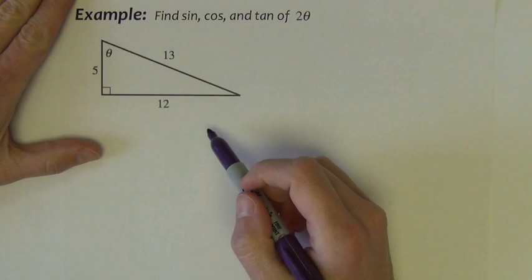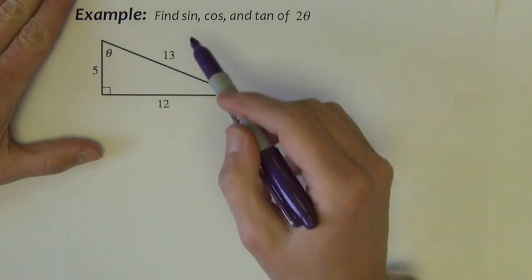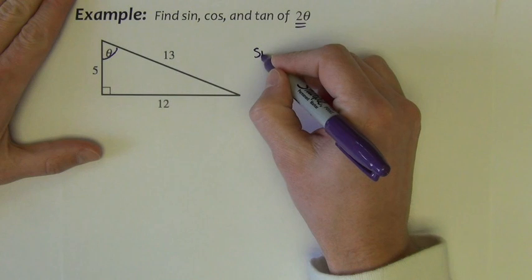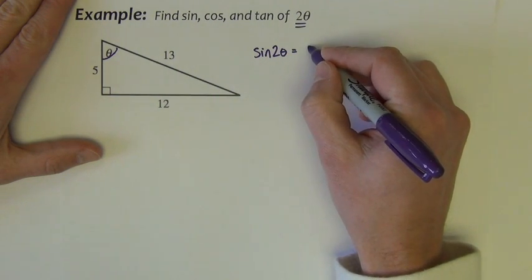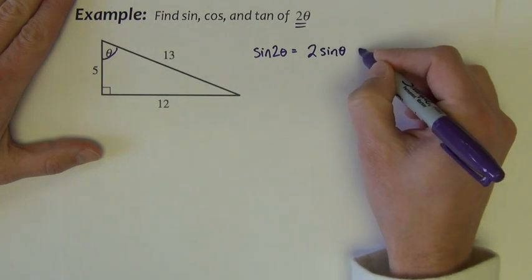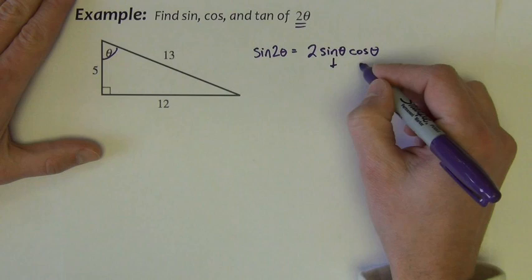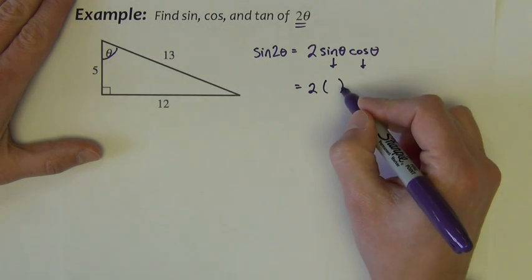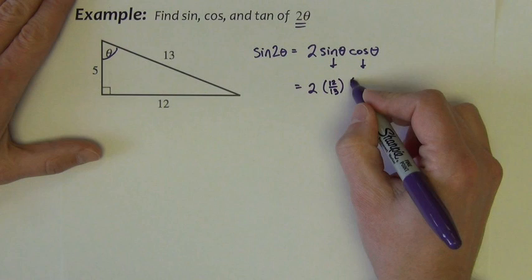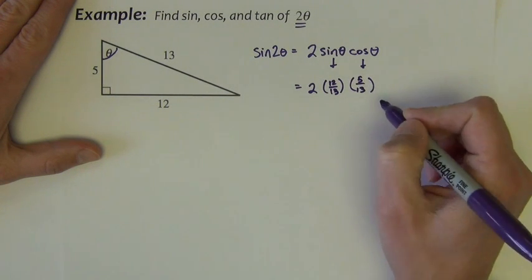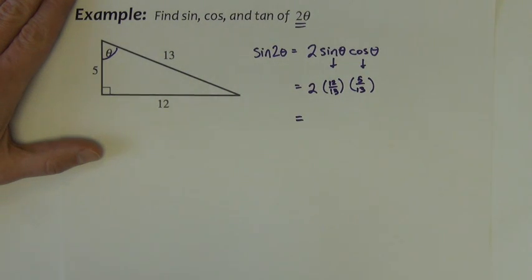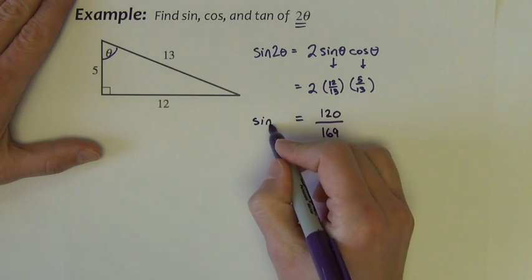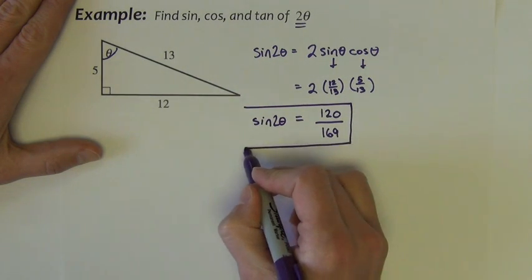The first type of example we want to look at: given a right triangle with sides known, find the sine, cosine, and tangent of 2 theta, where theta is this angle right up here. So, to find the sine of 2 theta, I use my double angle identity, which is 2 sine theta cosine theta. These two values come right out of the triangle using my Sohcahtoa definitions. This is 2 times the sine, which is opposite over hypotenuse, times the cosine, which is adjacent over hypotenuse. We multiply these together, we get 120 over 169. There's our sine of 2 theta.